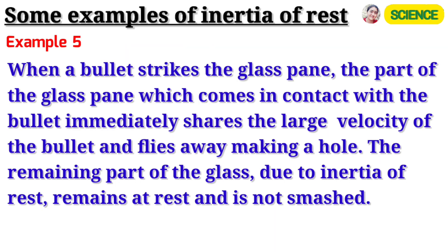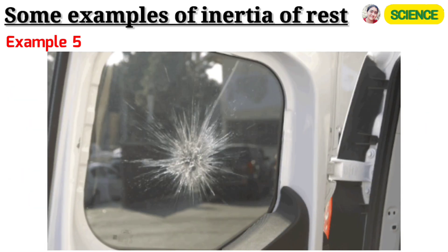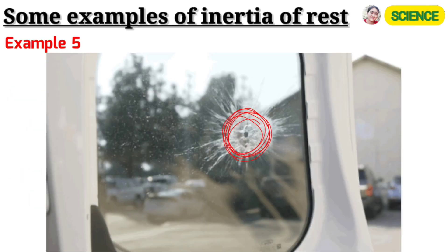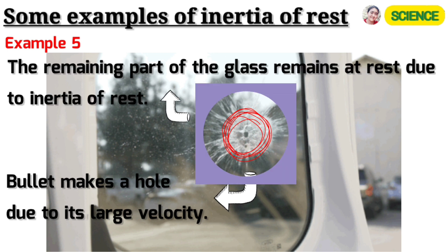Example 5: When a bullet strikes the glass pane, the part of the glass pane which comes in contact with the bullet immediately shares the large velocity of the bullet and flies away, making a hole. The remaining part of the glass, due to inertia of rest, remains at rest and is not smashed.